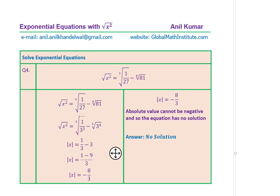Here is the fourth and last question. The equation is: the square root of x squared equals the cube root of one over 27 minus the fourth root of 81. I'd like you to pause the video and solve this. The square root of x squared is the absolute value of x. One over 27 is one over 3 cubed, whose cube root is one over three. And 81 is 3 to the fourth, whose fourth root is 3. So we get one over three minus three, which is a negative number — and the absolute value can never be negative.